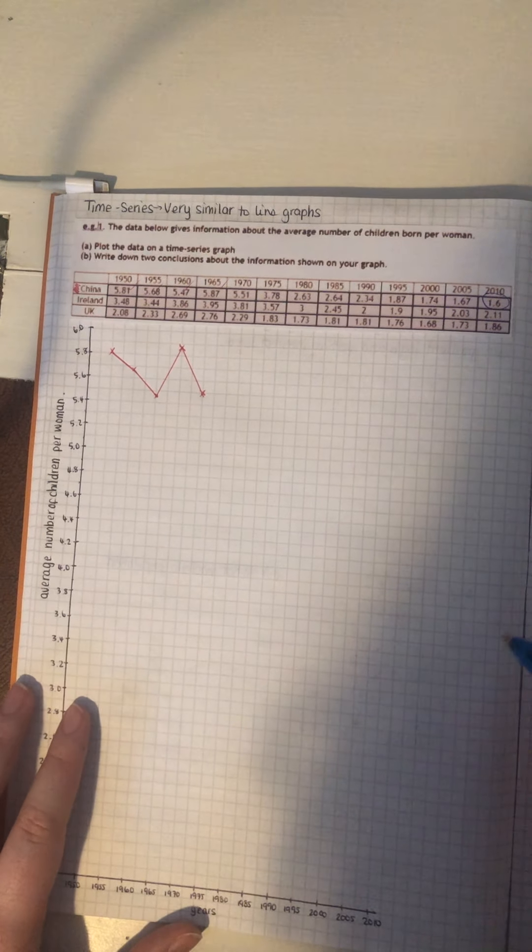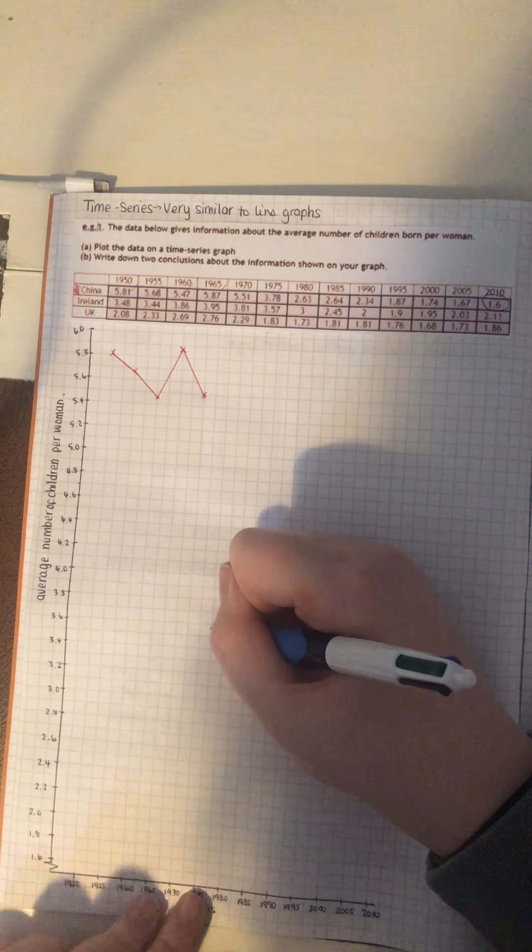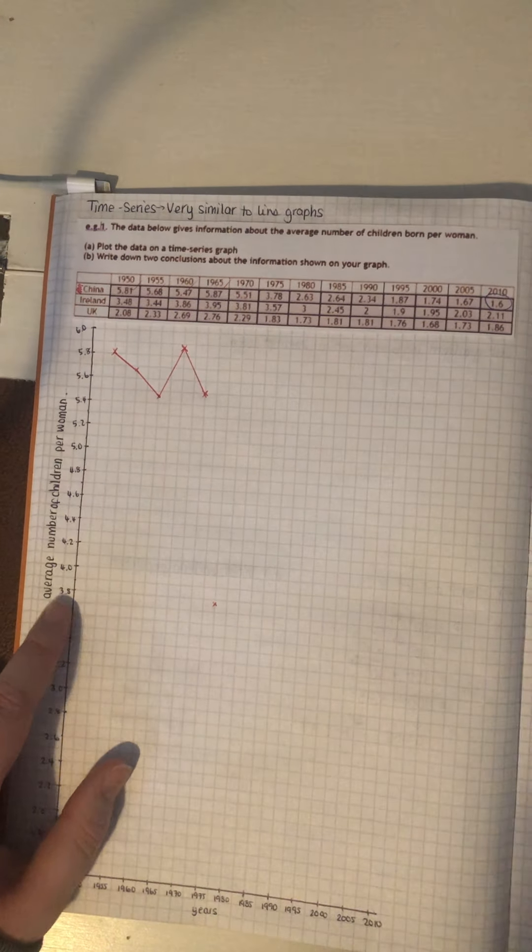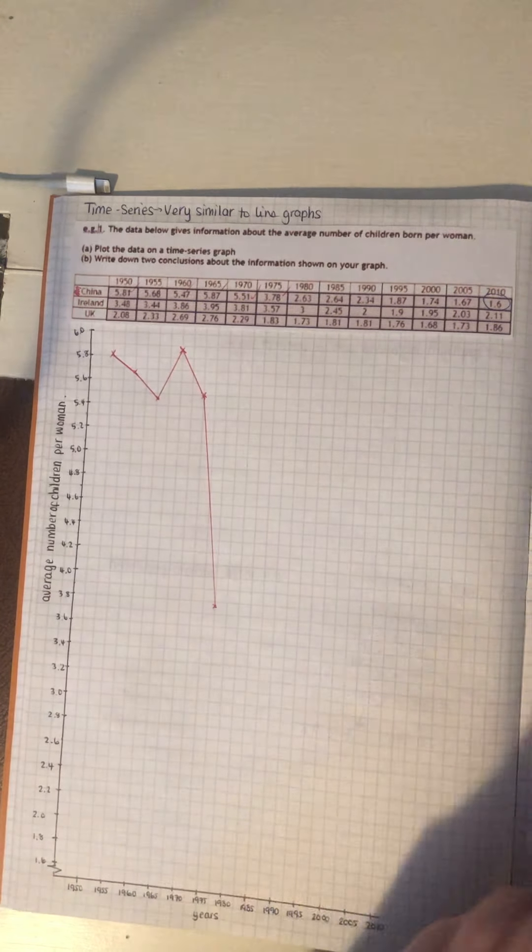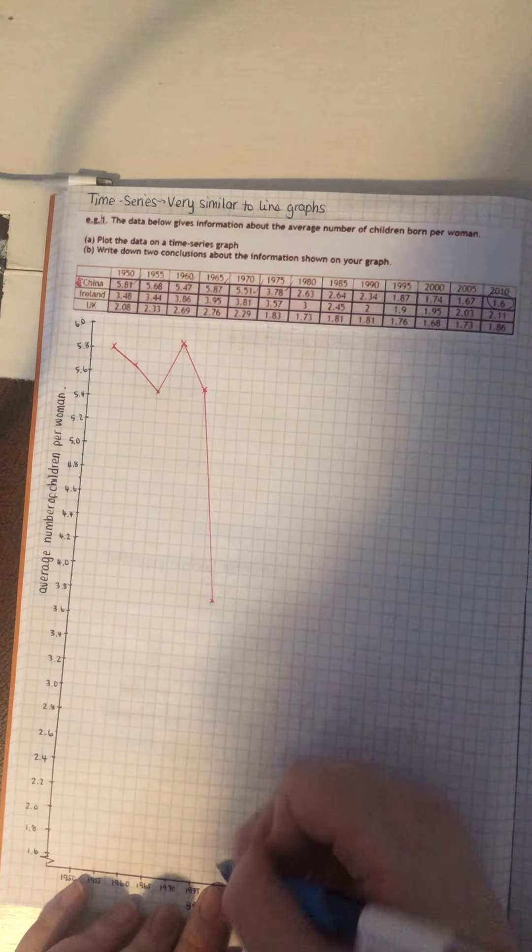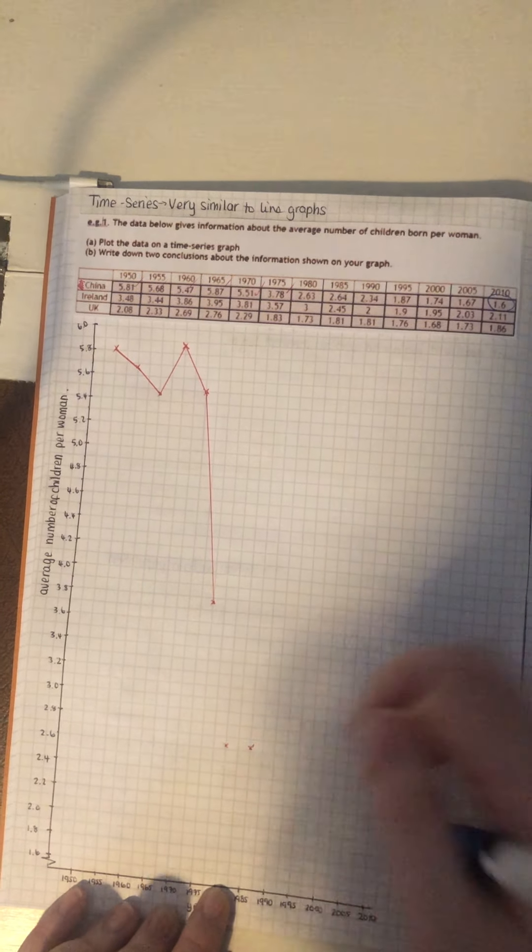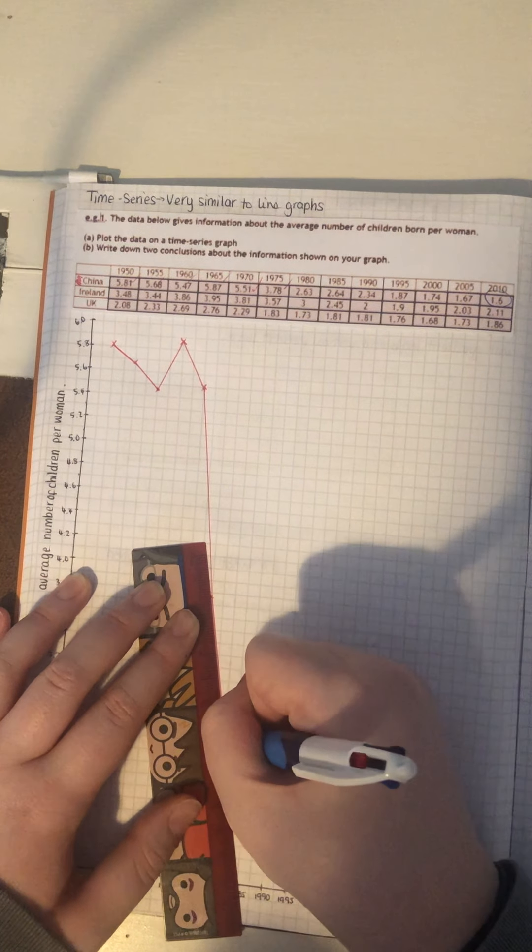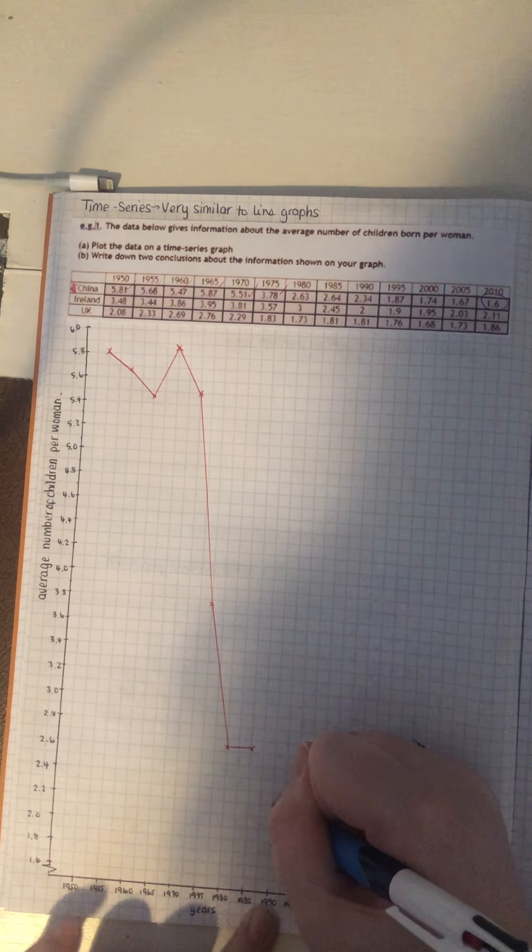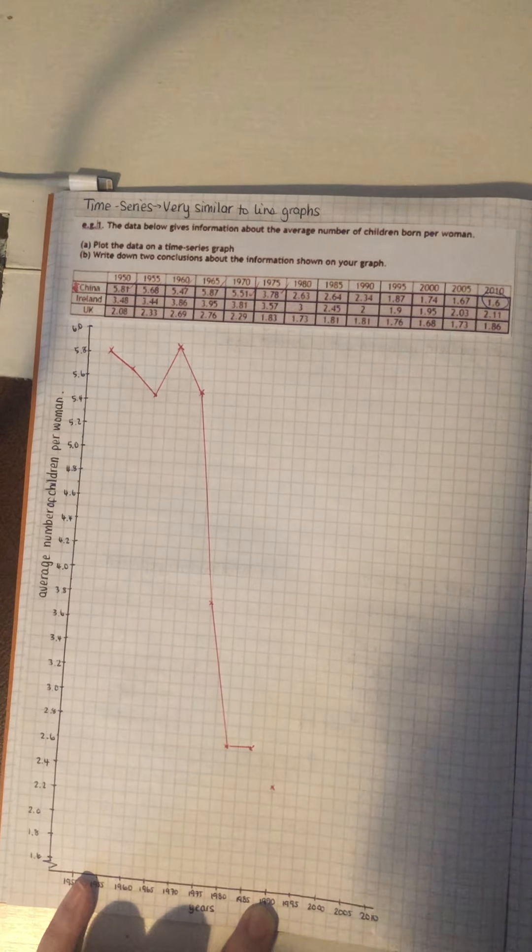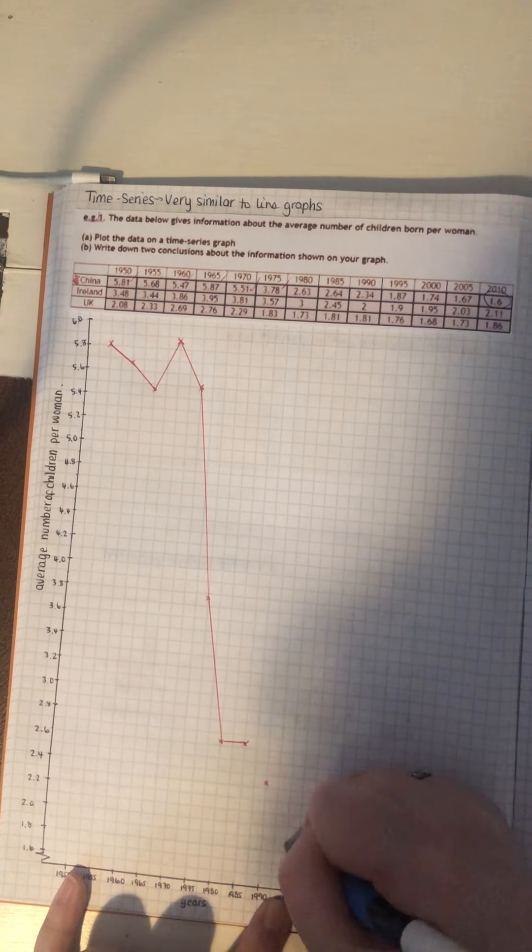And then it's going to dramatically drop. So, 1975 is 3.78, even further down. Just below 3.8. Then it drops even further. So, 1980 is 2.63. So, roughly there. And 1985 is 2.64. 1990 is 2.34, about there. And it drops again. So, 1995 is 1.87. So, it's just going to be about there.